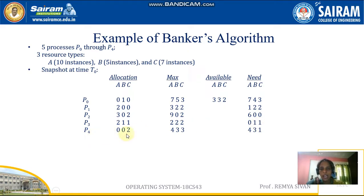P4 is allocated with only 2C, and the maximum it requires is 4A, 3B, 3C. So the need is: 4 minus 0 is 4, 3 minus 0 is 3, 3 minus 2 is 1.